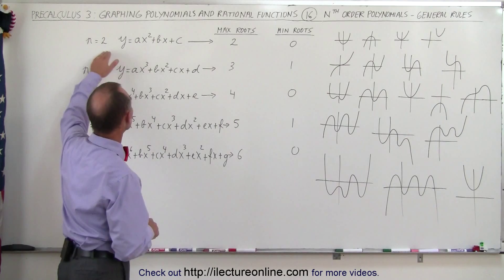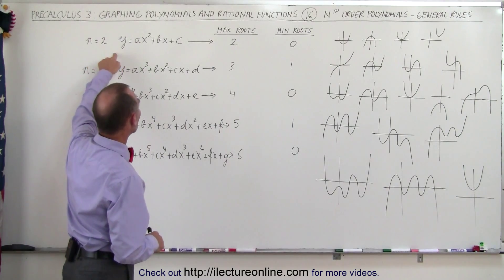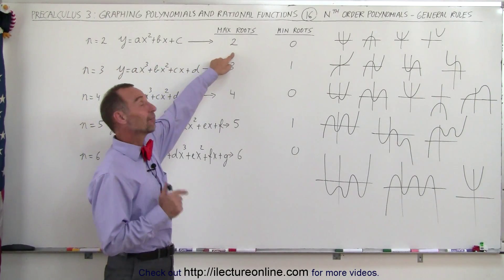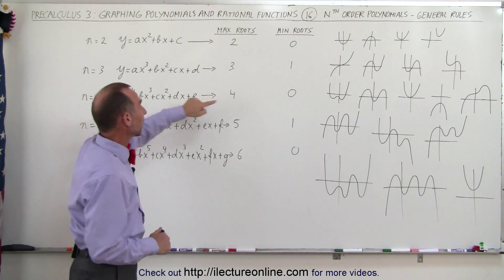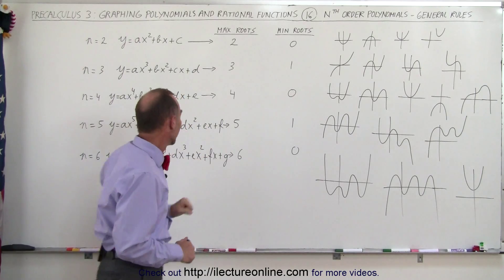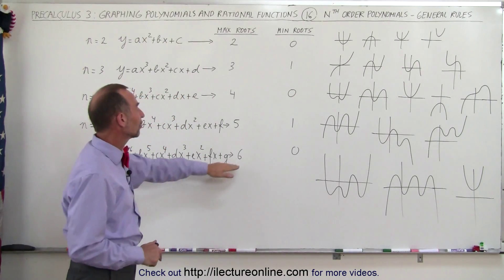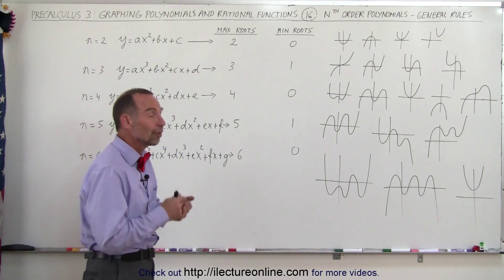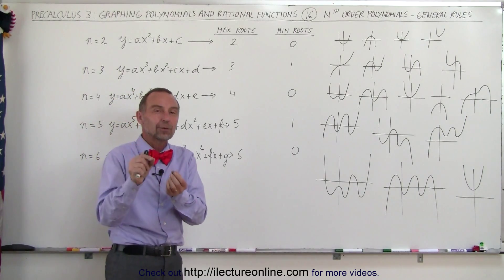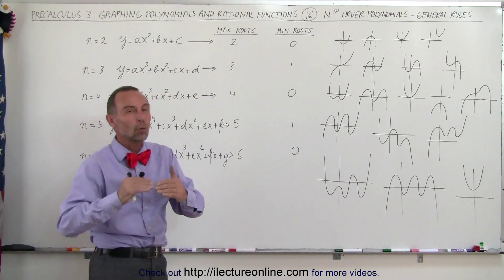Let's take a look at all the even-order ones. Notice if it's second order, the maximum number of roots you can have is 2, the minimum is 0. If it's fourth order, the maximum you can have is 4, and the minimum is 0. Sixth order, the maximum you can have is 6, and the minimum is 0. So all even-order polynomials, the maximum number of roots they can have is equal to their order, and the minimum is always 0.